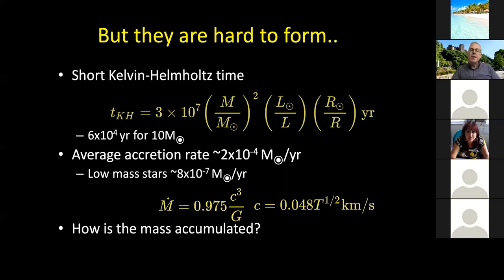For a ten solar mass star, this is about 60,000 years, which is very different to 30 million years. So these high mass stars form very fast, which is a challenge. It's a challenge to understand how that happens. Because the accretion that you need over this ten to the four, six times ten to the four years to form this ten solar mass star is about two times ten to the minus four.